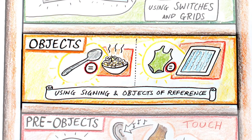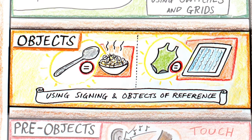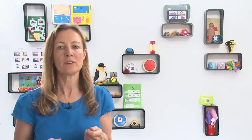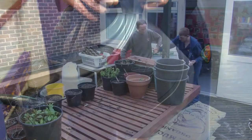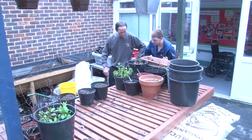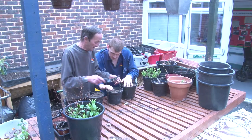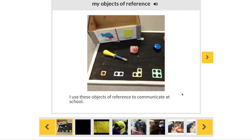We now move up the ladder to real objects — we often call these objects of reference — and these are usually used in transition. For example: I give you a spoon, and you know you're going to the dining room for lunch. I give you your swimming costume, and you know you're going to the swimming pool. What's really key with objects of reference is consistency, so that the person always gets the object before that particular activity. The wiki is useful for sharing what these objects are so the person gets consistency everywhere they go.